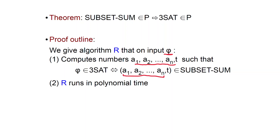R translates 3SAT questions to Subset Sum questions. If you give R a formula phi as input, R is going to compute a list of numbers a_i's and a target t such that you can find a subset of the a_i's which sums to t if and only if the formula is satisfiable. This is one of my favorite reductions because it shows how Subset Sum is really a combinatorial problem — at first sight it seems about adding numbers, but in fact it's about satisfiability.